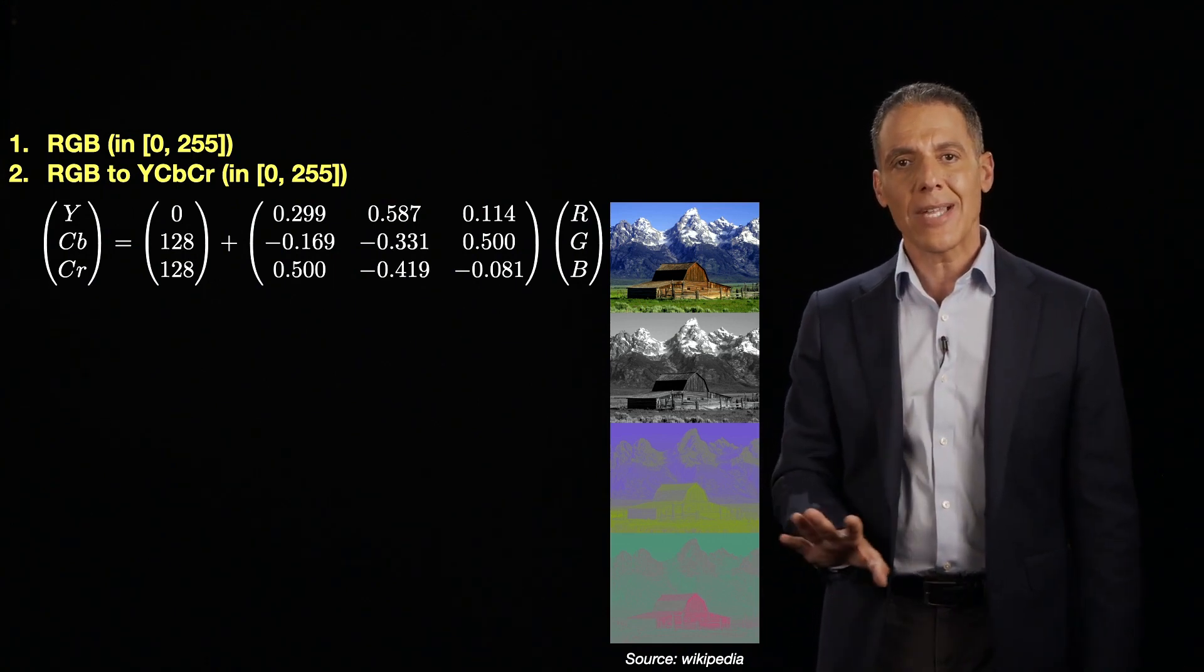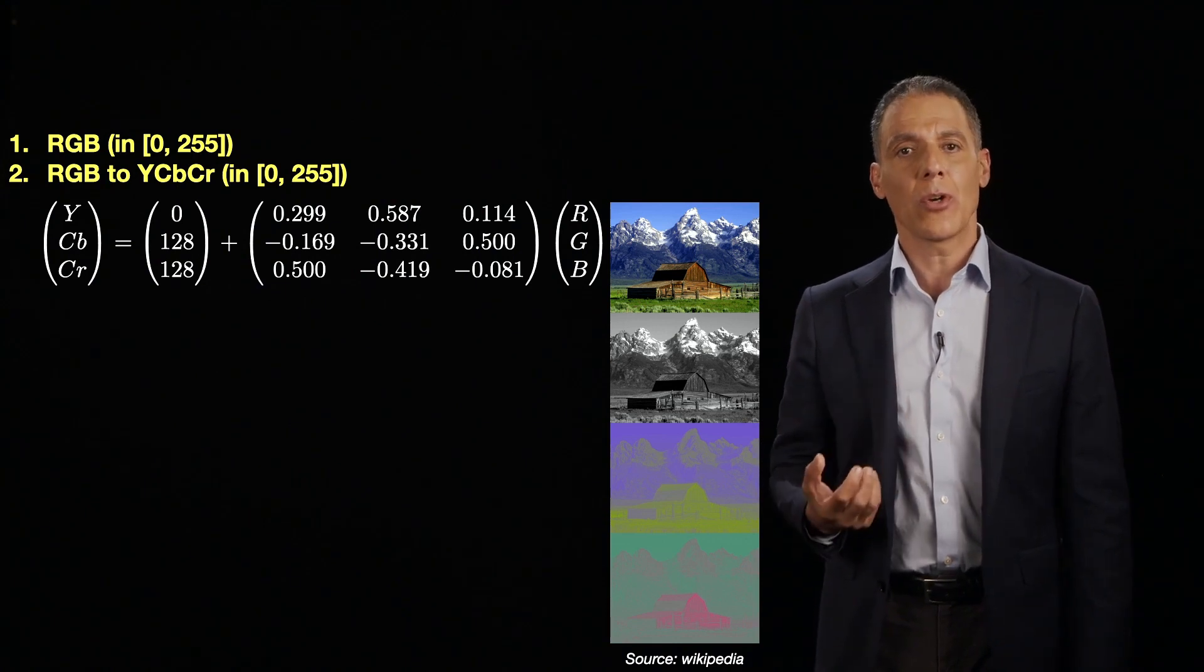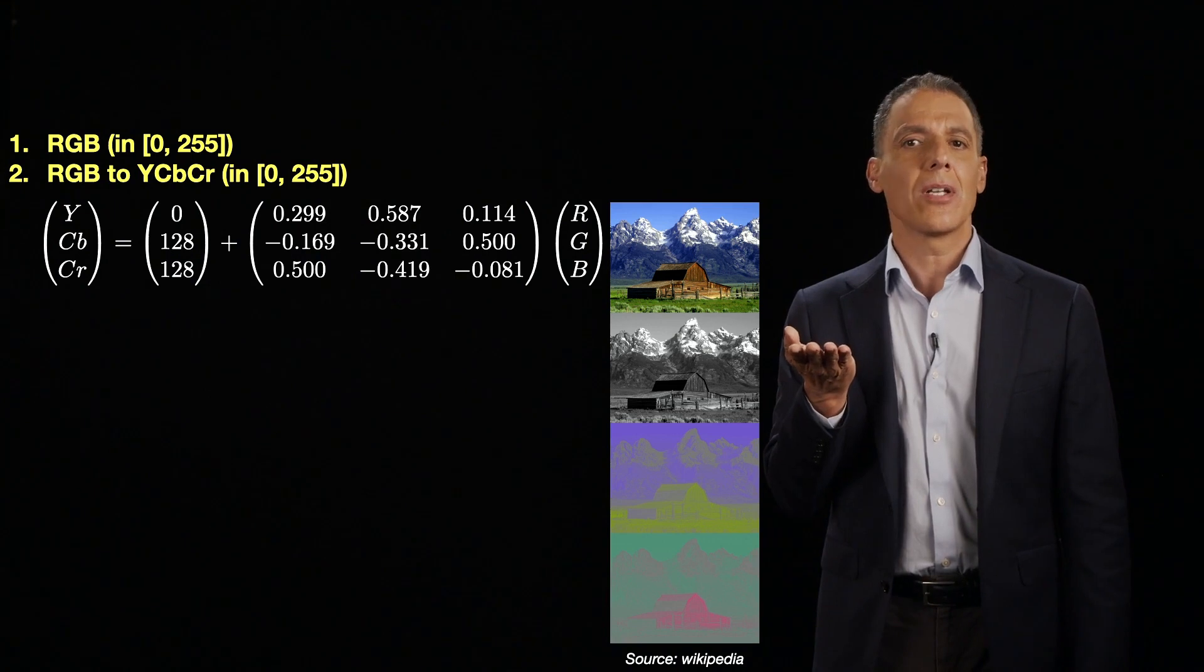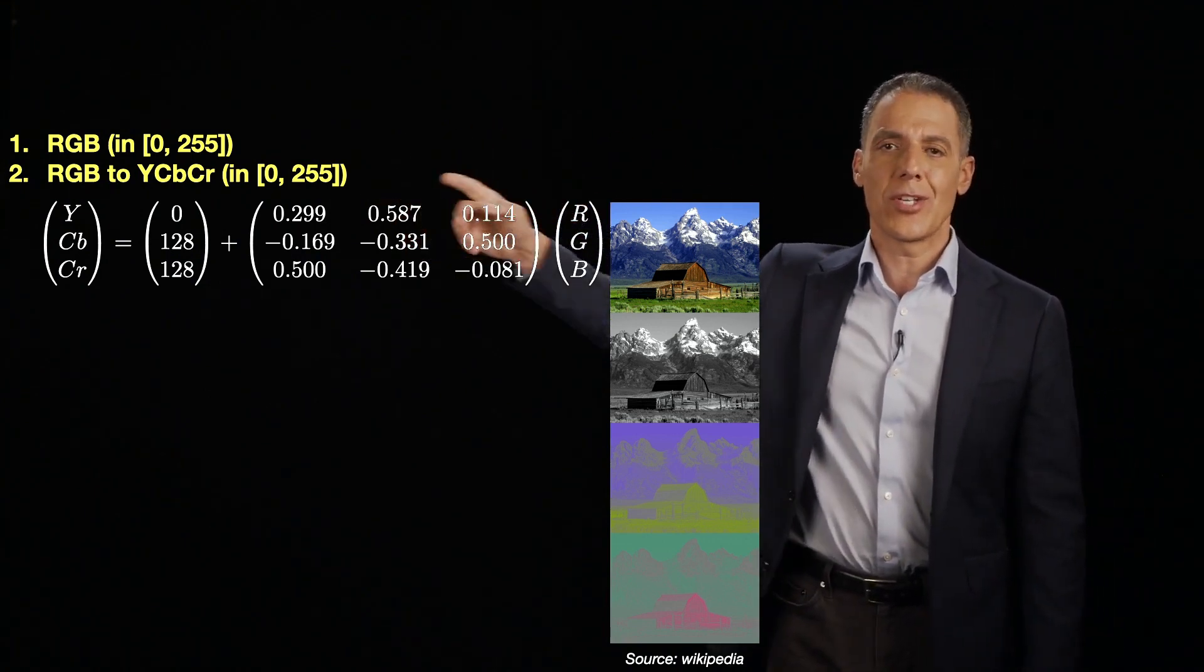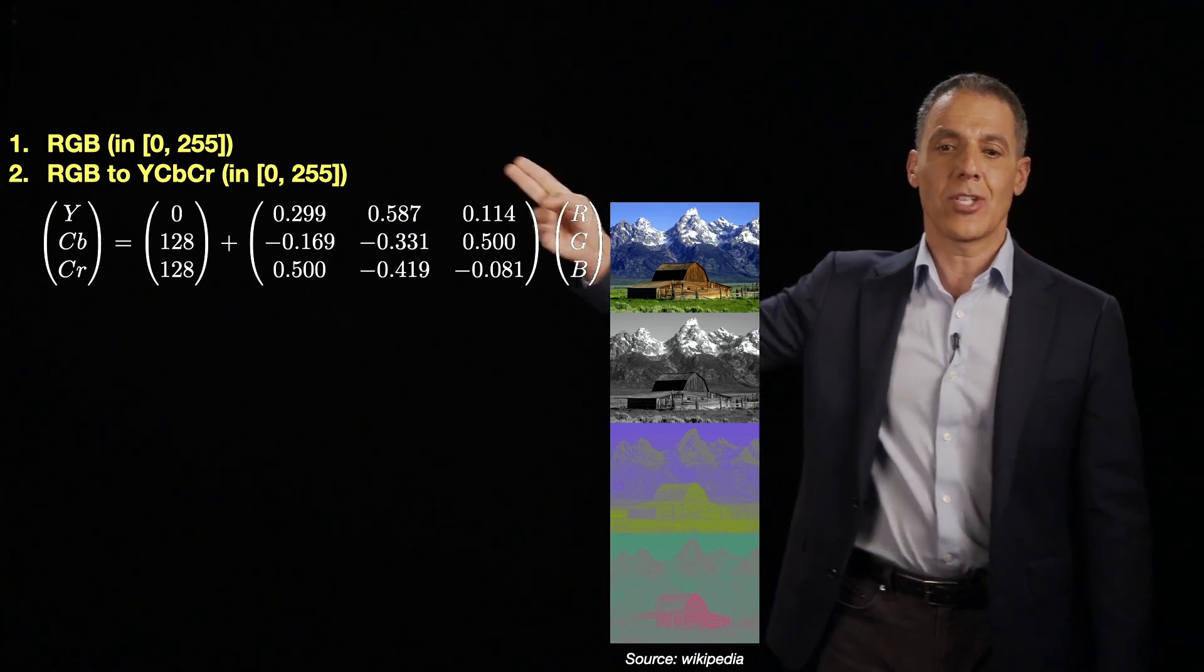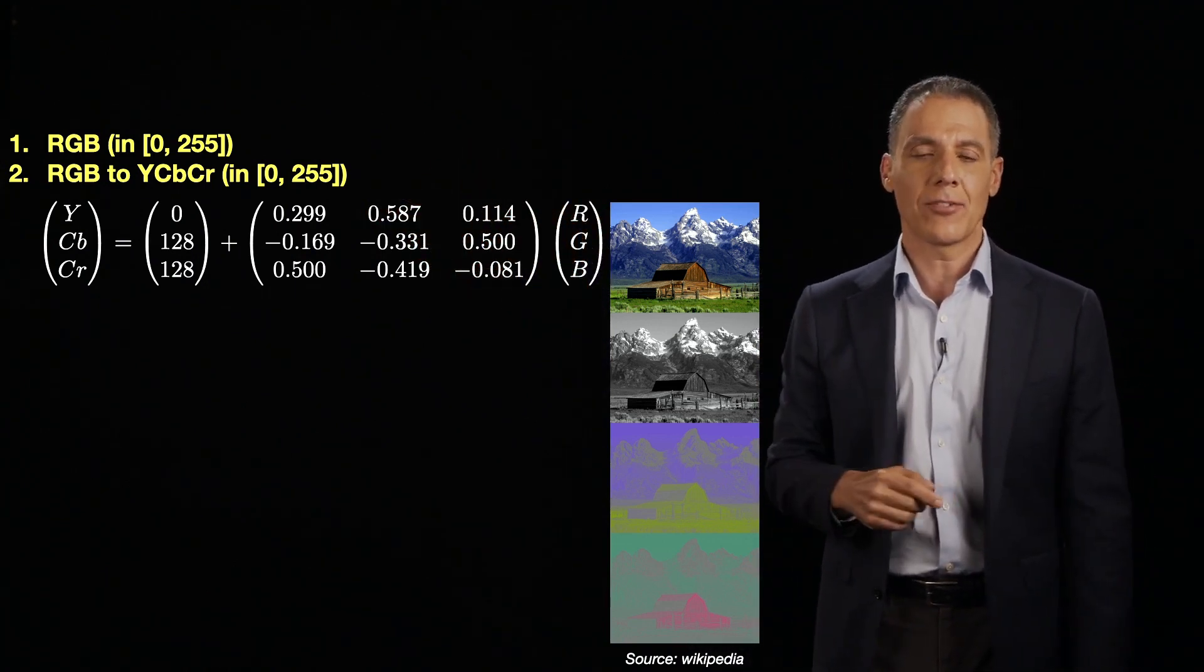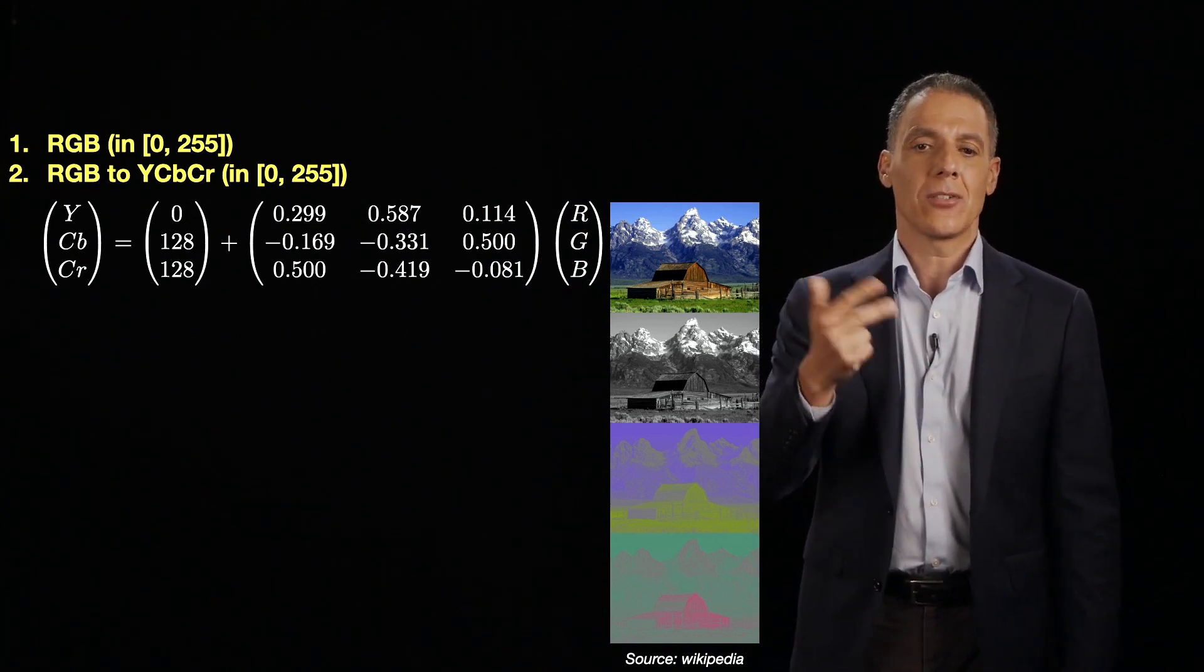Because we are less sensitive to color in the human visual system, we're going to be able to get away with doing a little more compression here than in the luminance channel. The first conversion, I'm showing you the equation here. It's just a linear transformation. You can see I'm just multiplying the RGB values by this matrix and then adding in an offset. And now I still get three channels, but they're just Y, CbCr.